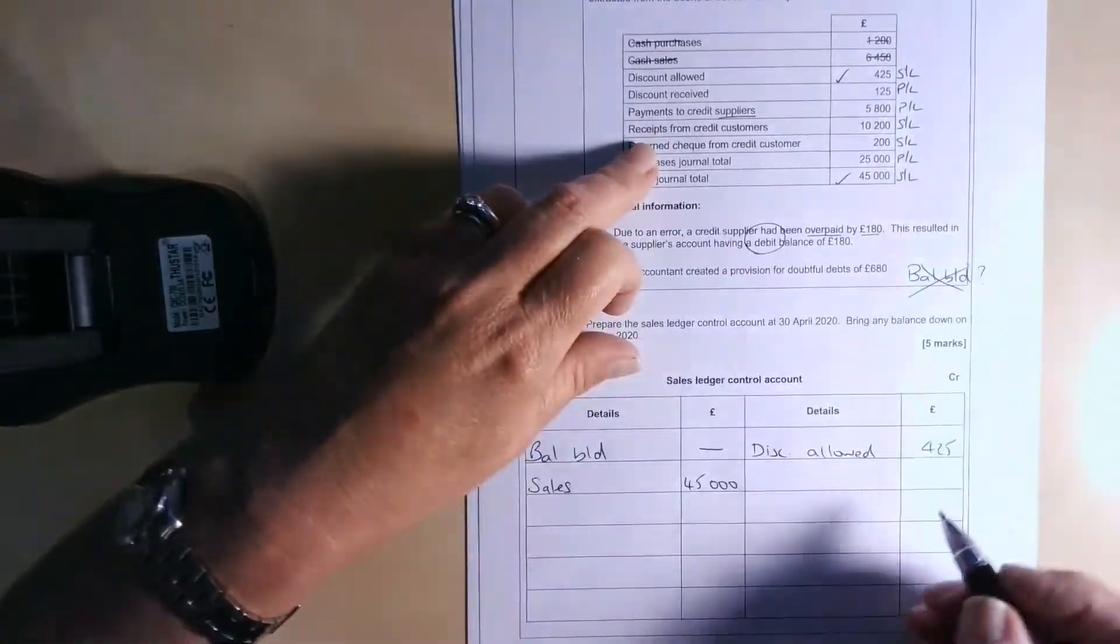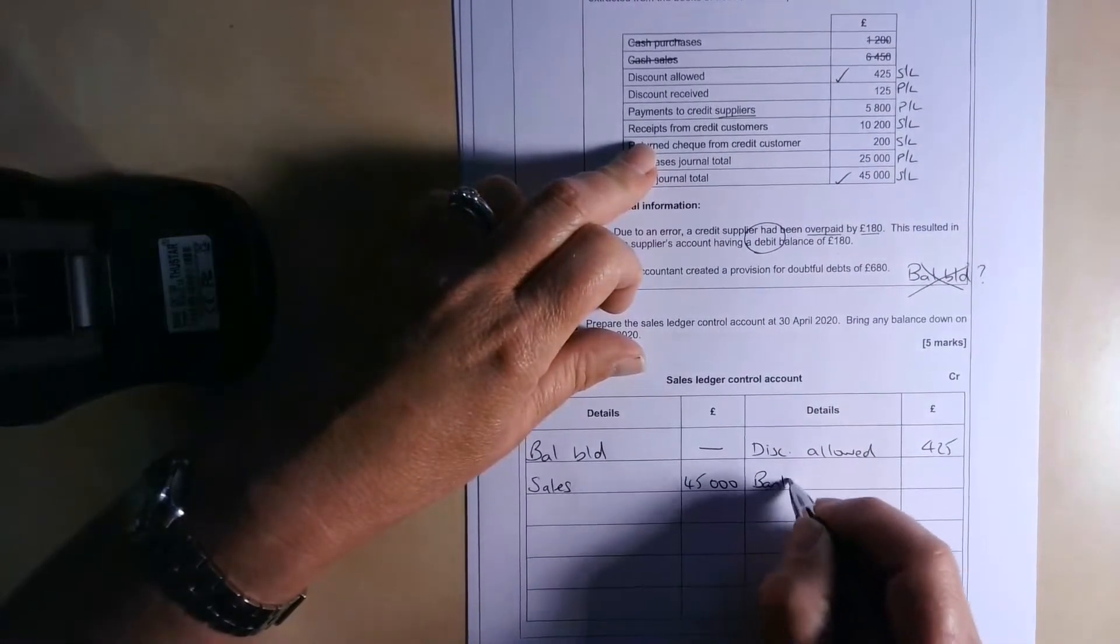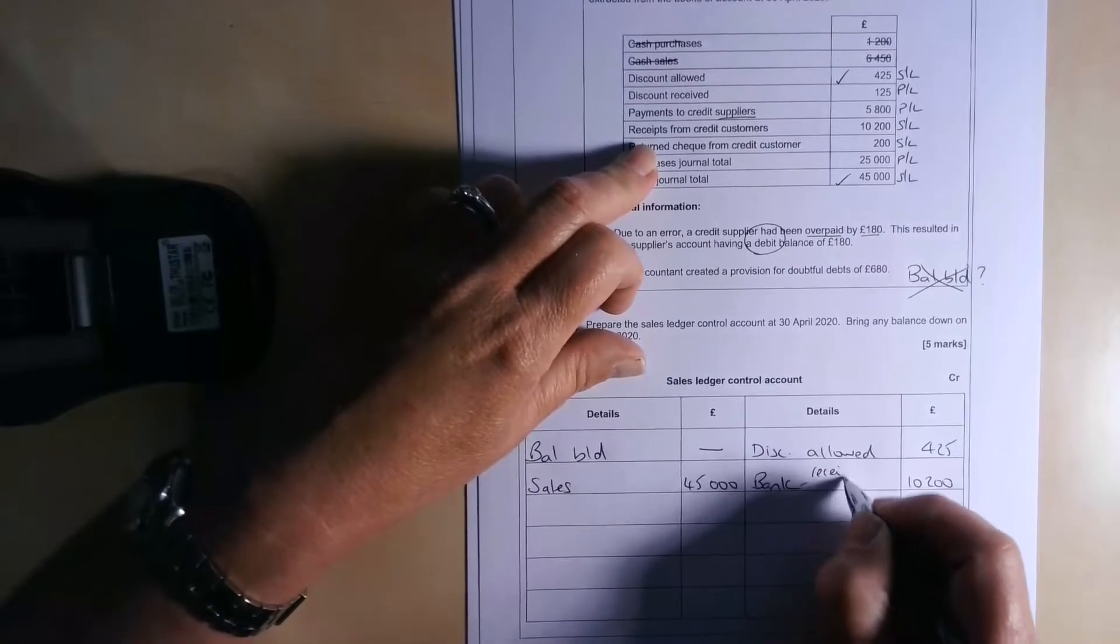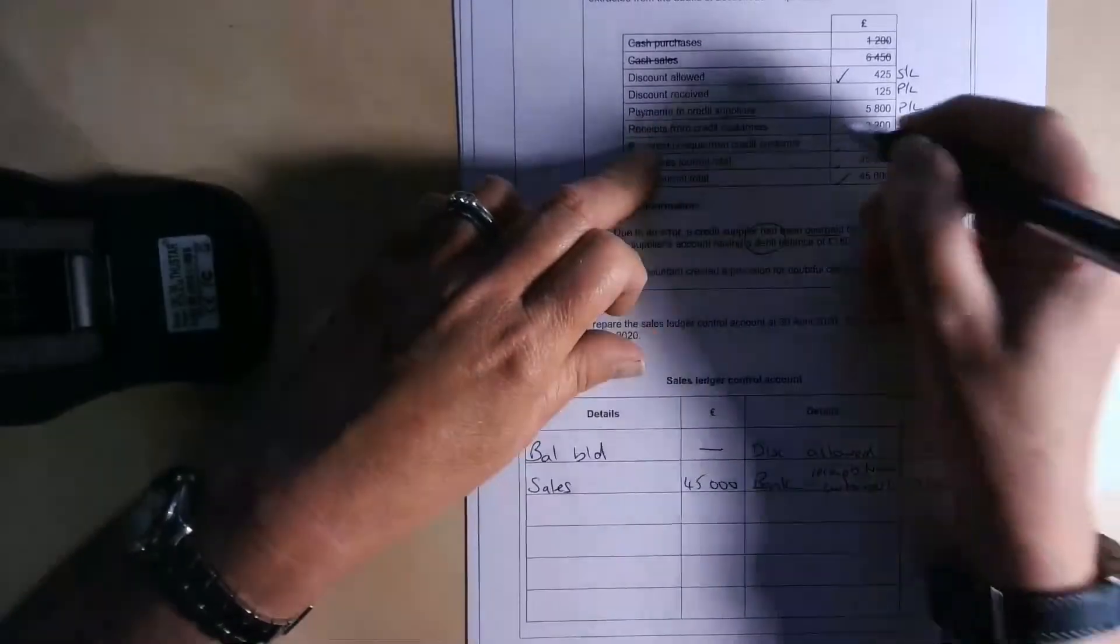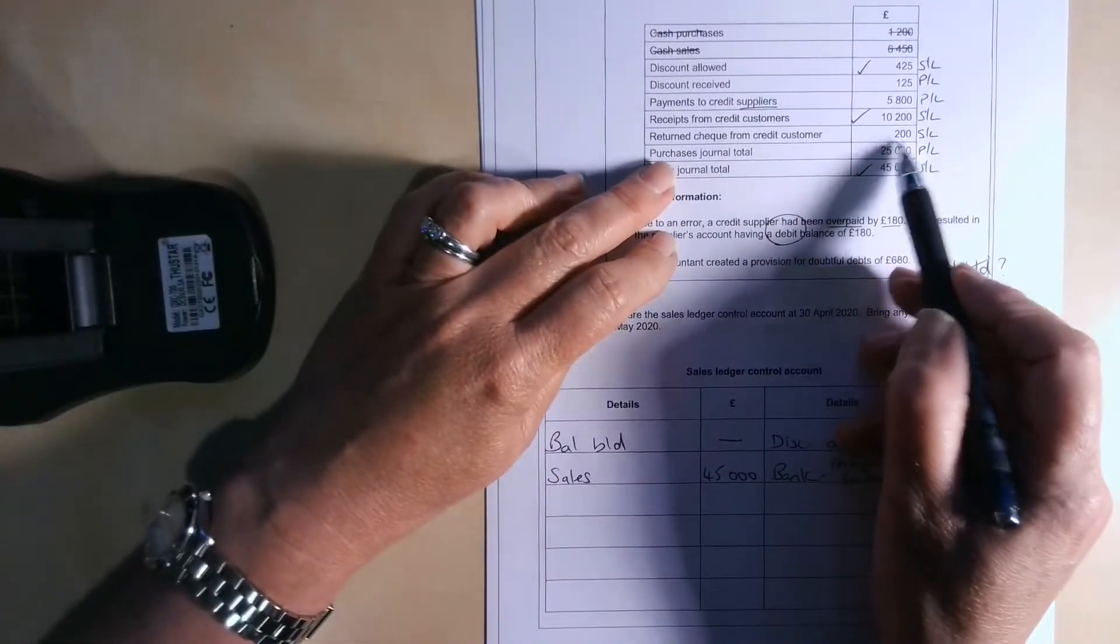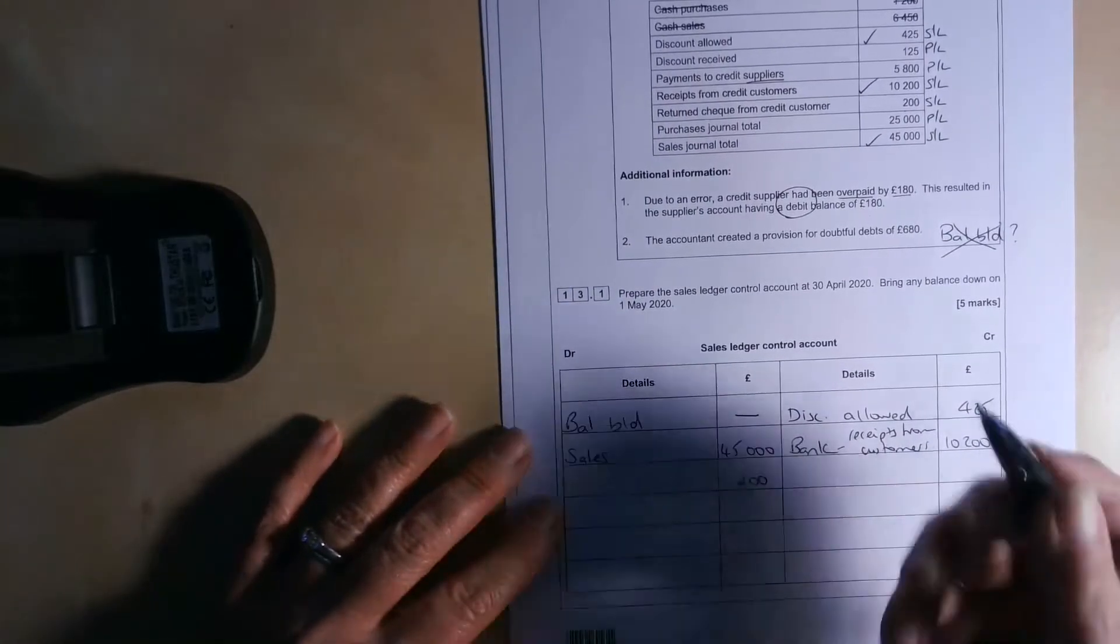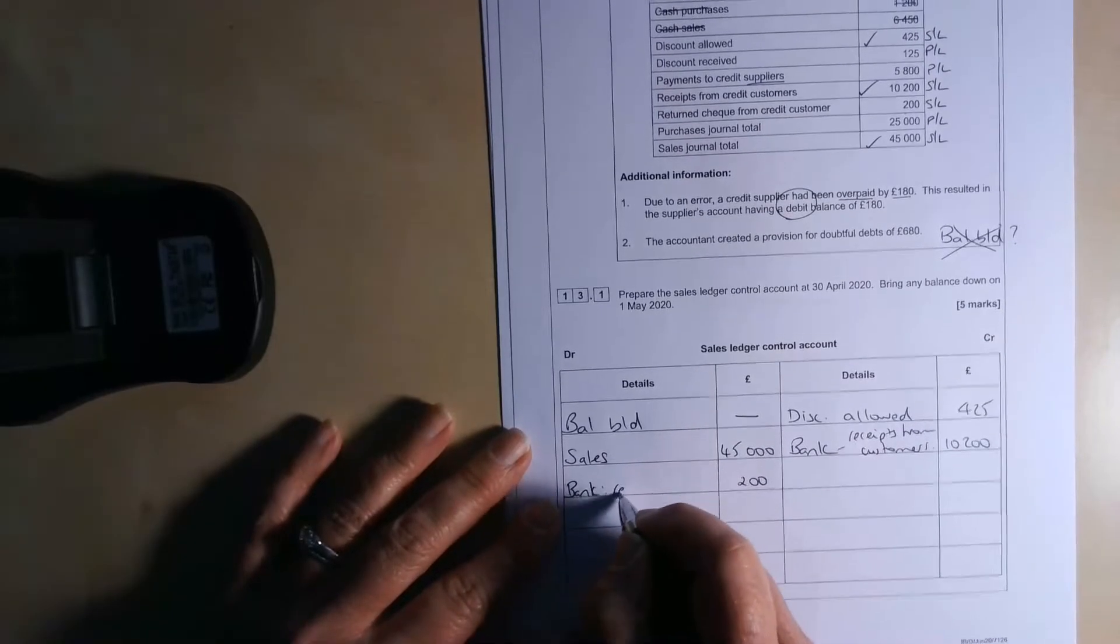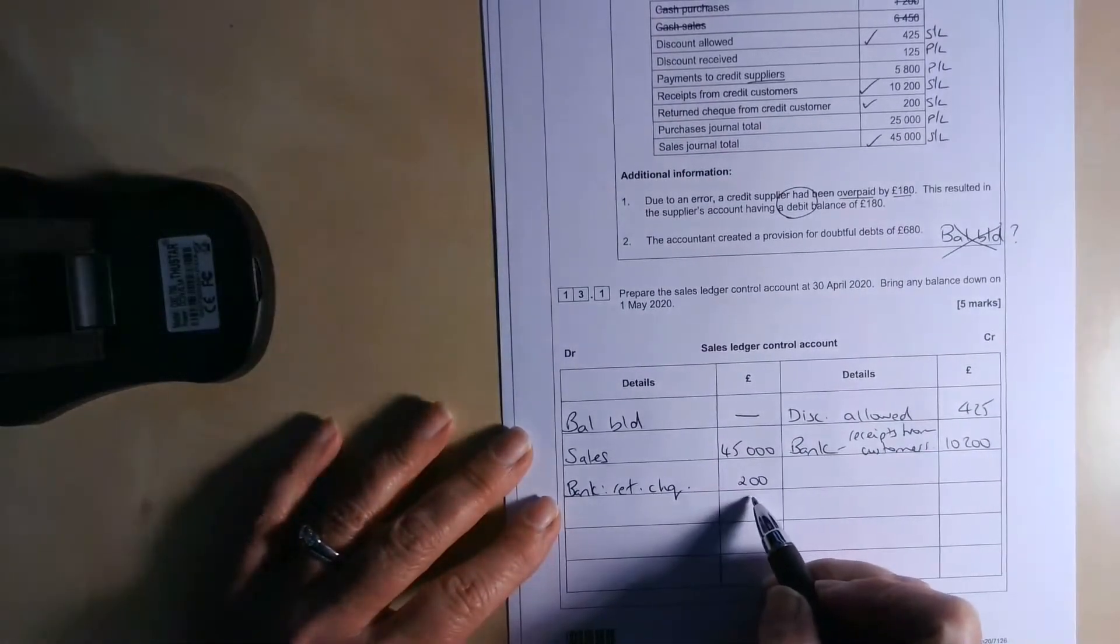Discount received is purchase ledger. Receipts from credit customers. So the double entry, we're debiting the bank. We're going to credit the sales ledger control account. So bank, I'll put their receipts from customers. So this is credit customers, not cash customers. And then we've got a returned cheque from a credit customer. Well, the double entry for that is going to be to credit the bank because it will be on the payment side of the bank and to debit the sales ledger control account and obviously the individual customer's account. So bank, in this case, a returned cheque, £200 in there on the debit side to reinstate the debt.